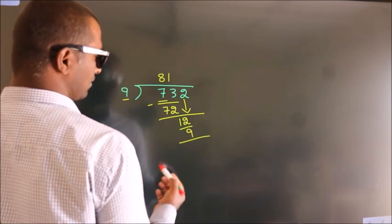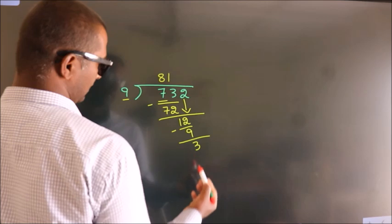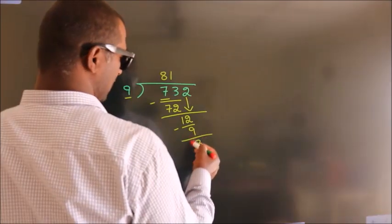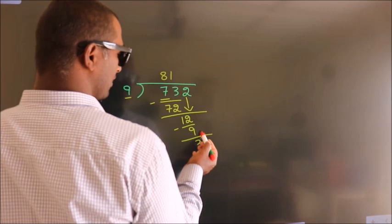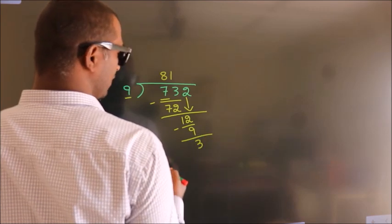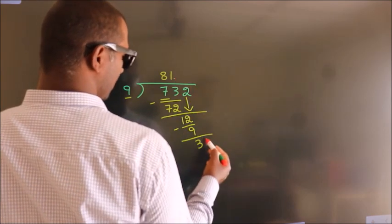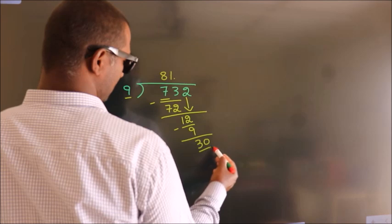Now we subtract. We get 3. After this, no more numbers to bring down, so what we do is put a dot and take 0, giving us 30.